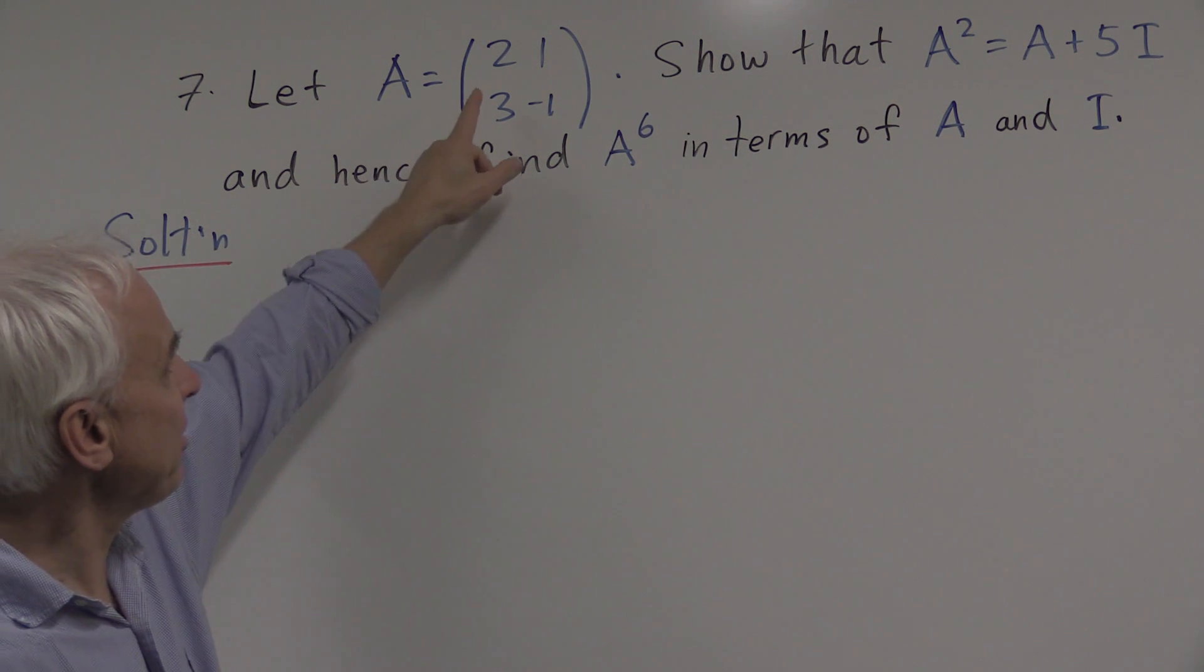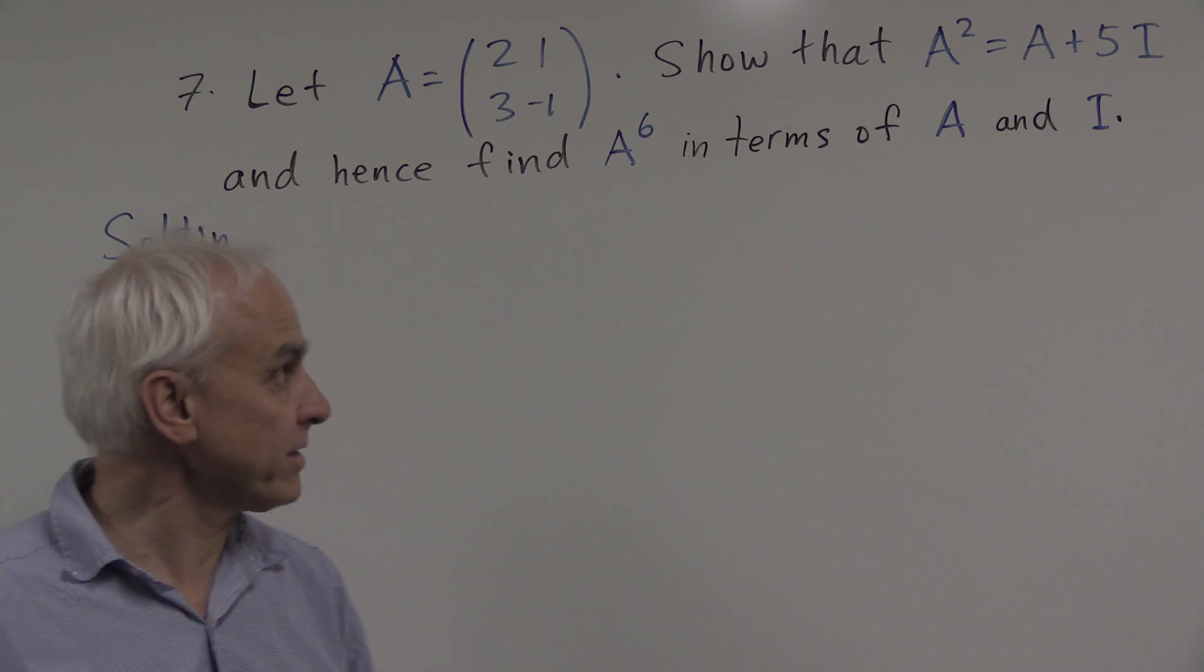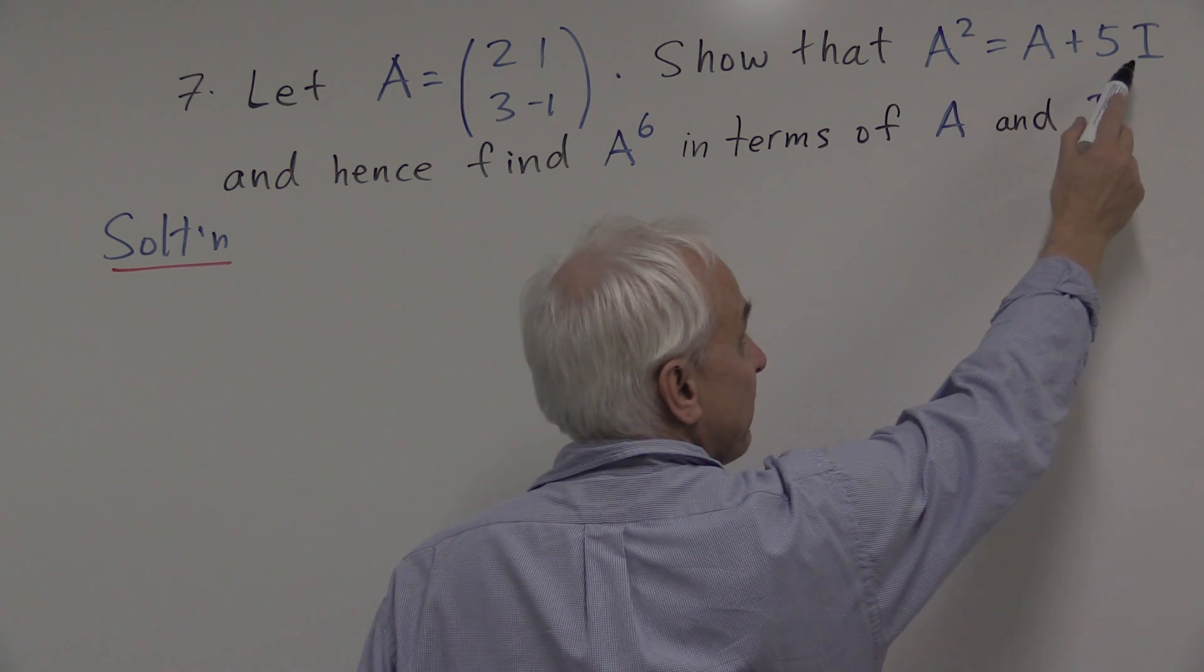We're asked to let A be the matrix 2, 1, 3, minus 1. It's a 2 by 2 matrix. And then we're asked to show that A squared equals A plus 5I.